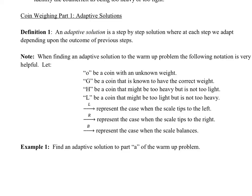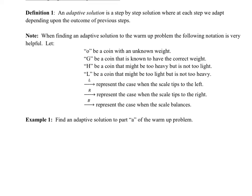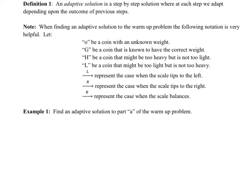Every mathematician tries to find the best notation to deal with different problems. Here's the notation that will be used in this video. A circle represents a coin we don't know anything about. G represents a coin known to have the correct weight — G for good. H is a coin that might be too heavy but not too light. L is the opposite — it might be too light but not too heavy. Arrows will represent different cases for how the scale responds: it either tips to the left, tips to the right, or balances, in that order.